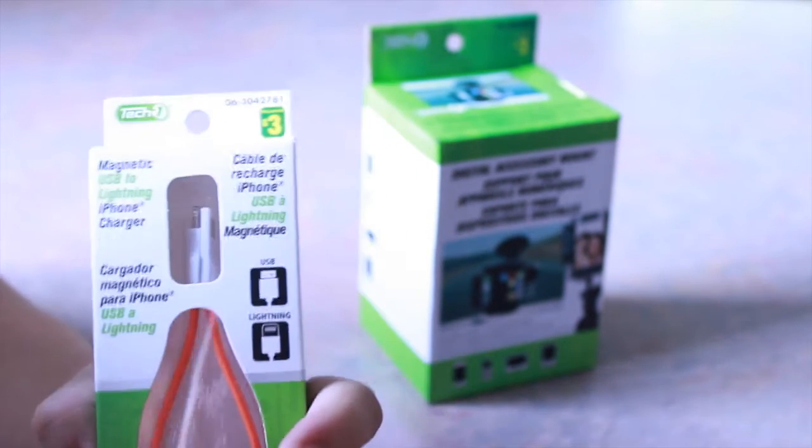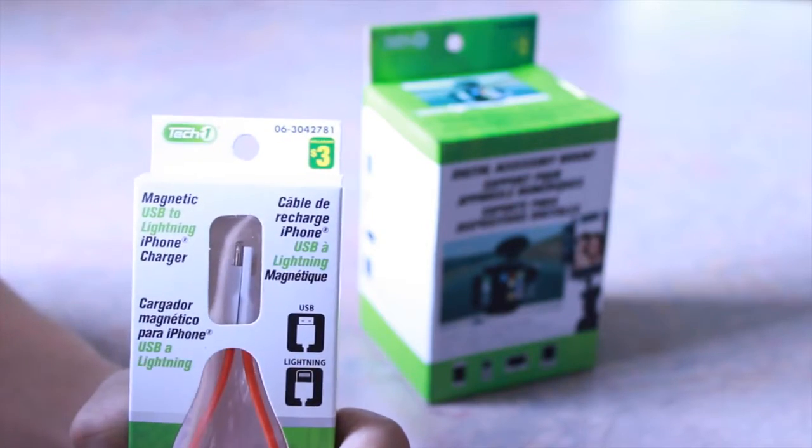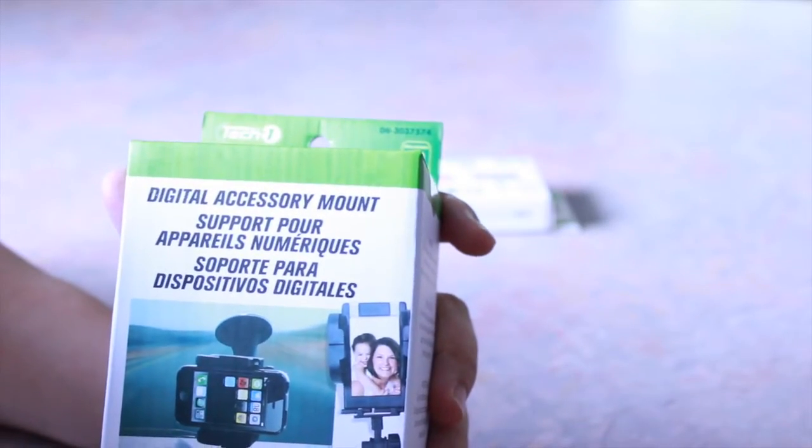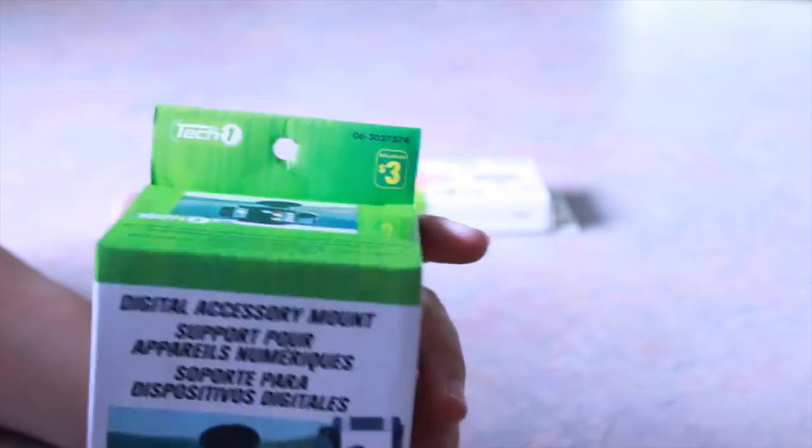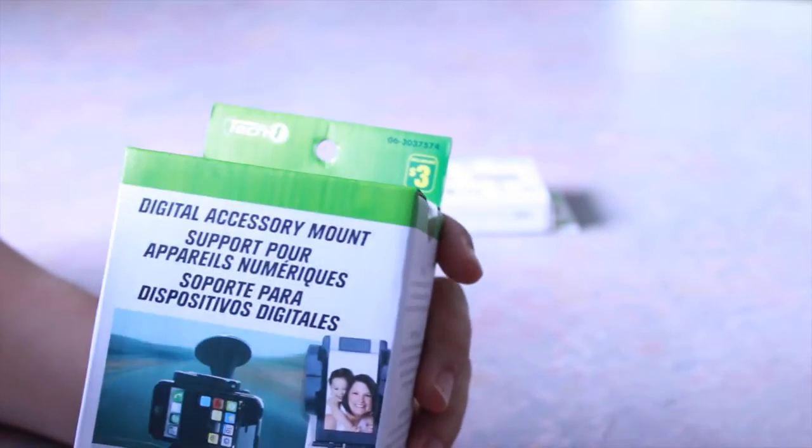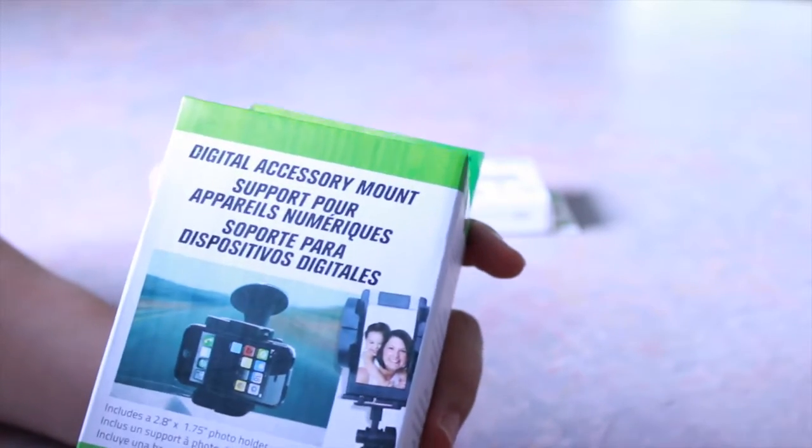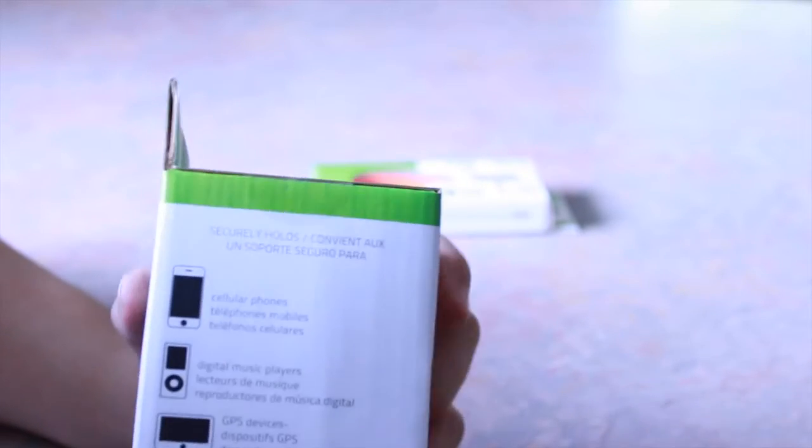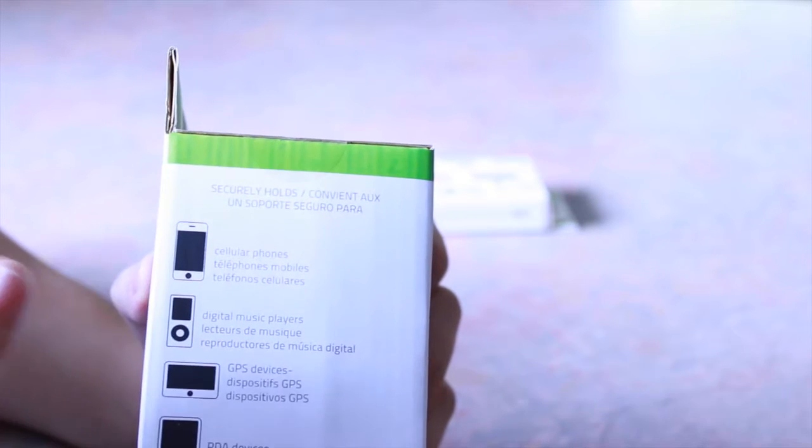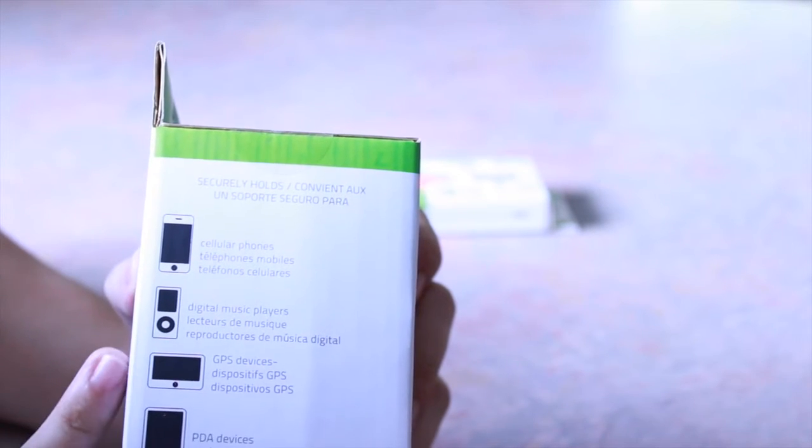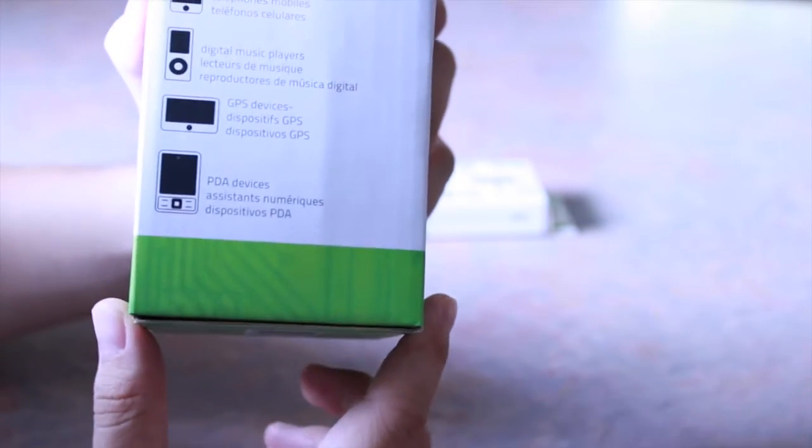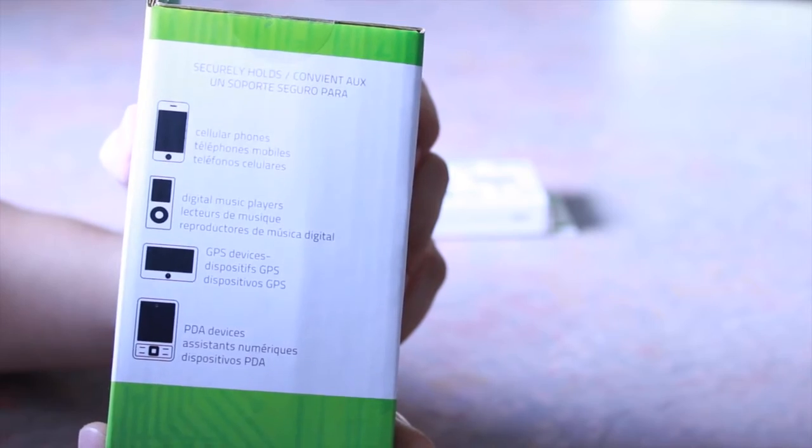I'm going to unbox this one first, which is the digital accessory mount, a really generic name. Three dollars as well, Canadian dollars. I needed one of these anyway because I don't have one, basically simple as that. On the side it says you can mount cell phones, music players, GPS, and PDAs.